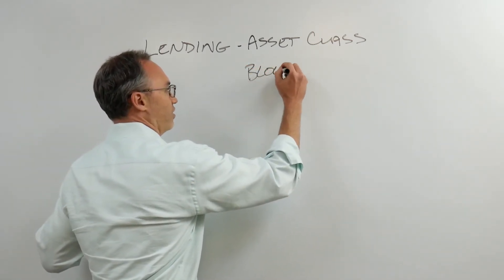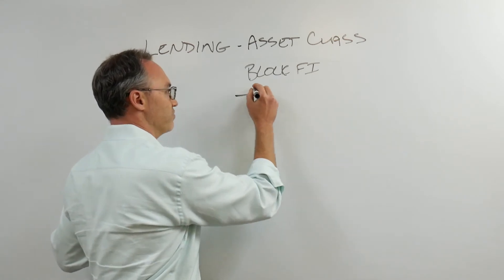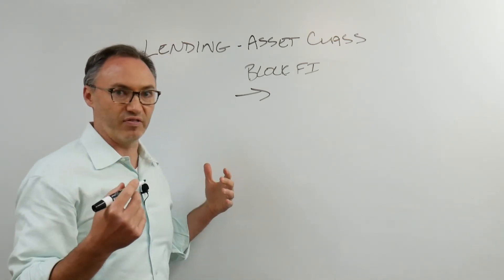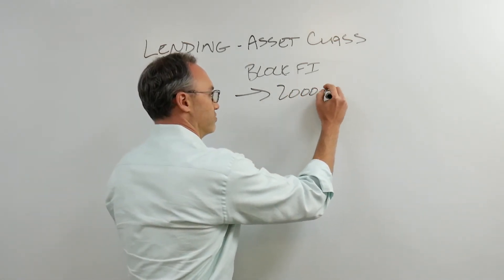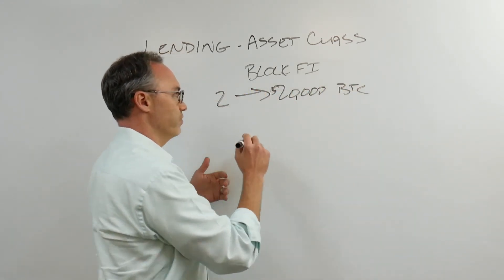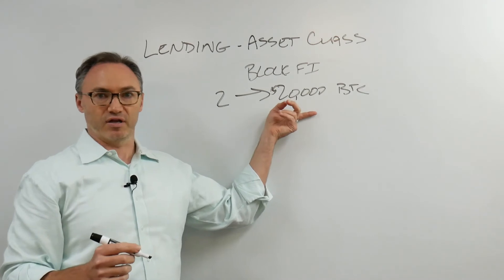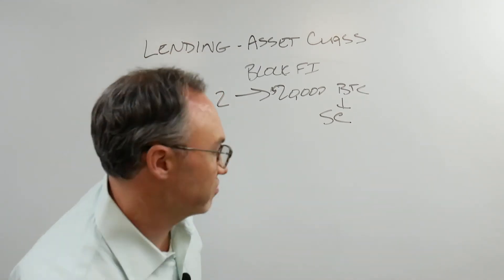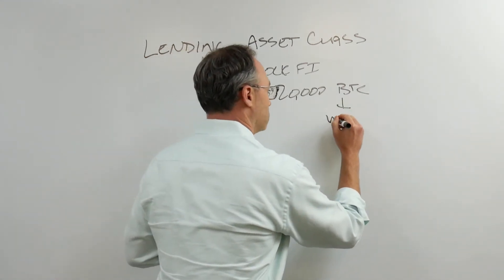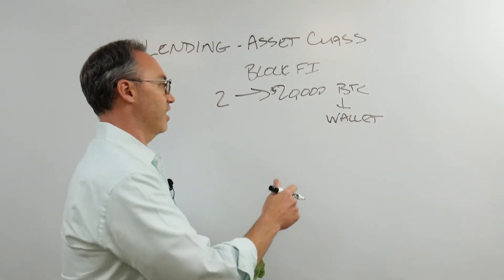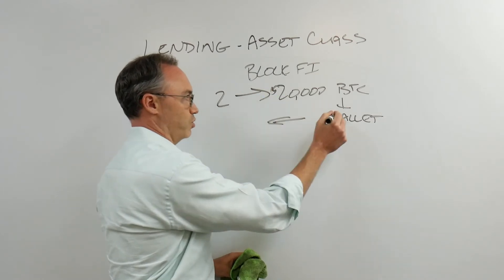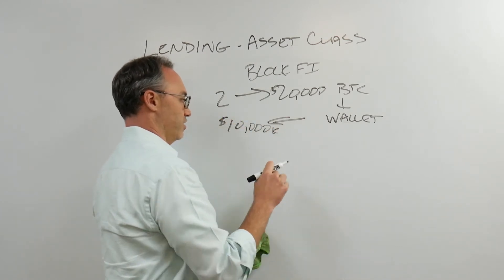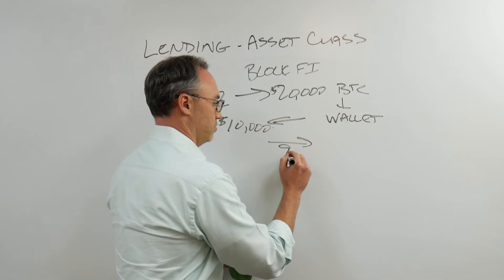The way something like BlockFi works: if I have two Bitcoin worth $10,000 each — $20,000 total — they might give me a $10,000 cash loan. My Bitcoin goes into a wallet that's theirs, denoting that I got this $10,000 loan. I send my two Bitcoin to this wallet, I get $10,000, and I pay them back interest.